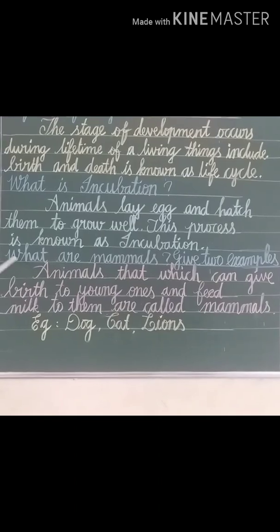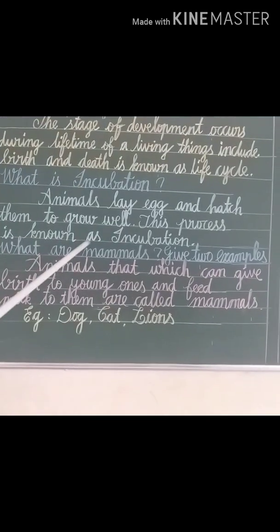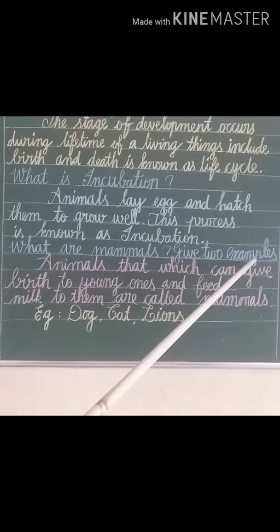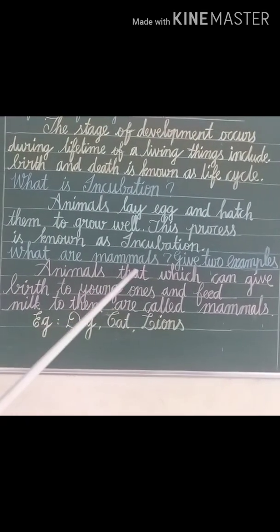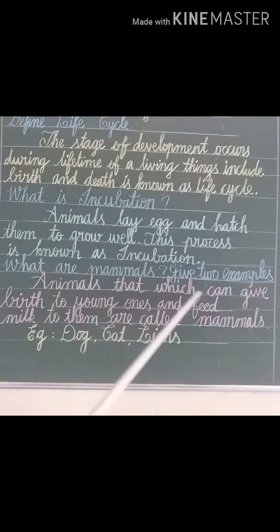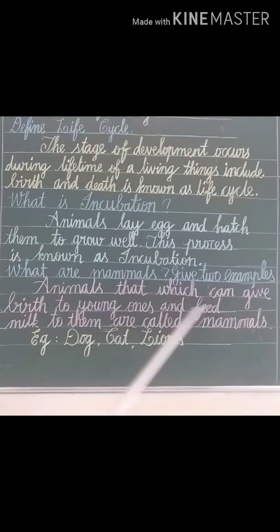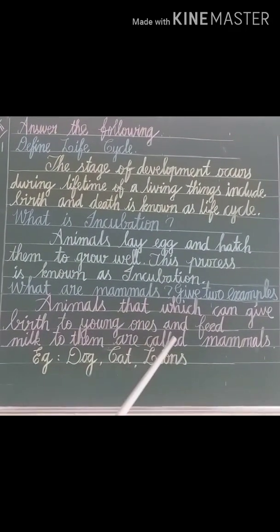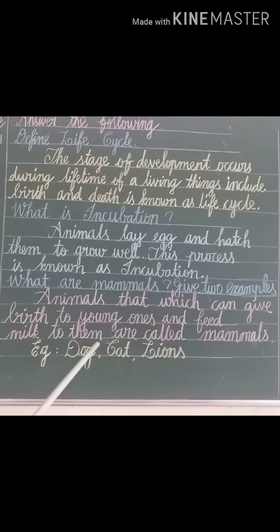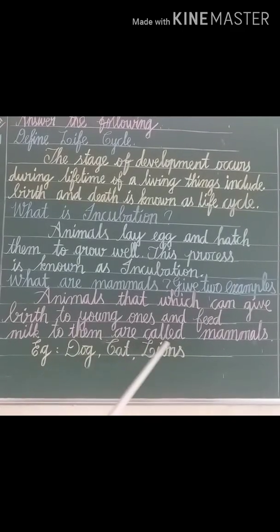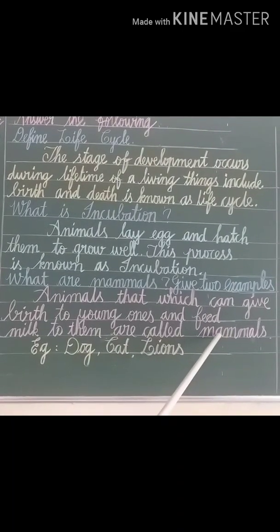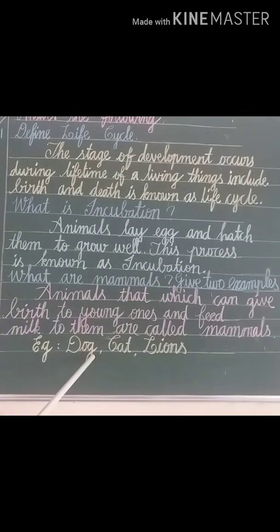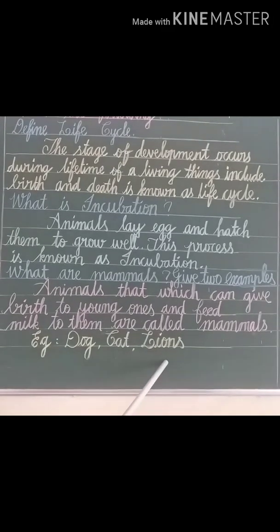Third question: what are mammals? Give two examples. Animals that give birth to young ones and feed milk to them are called mammals. For example, dog, cat, and lion.